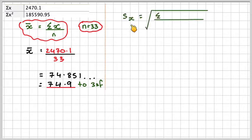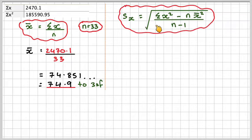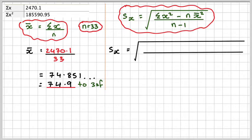For the standard deviation, we're using the MEI specification here. It will be the square root of Sigma X squared minus N times the mean squared, divided by N minus 1. So putting the numbers in,